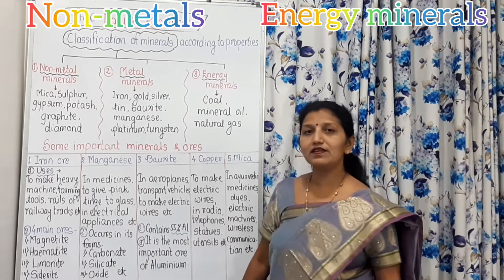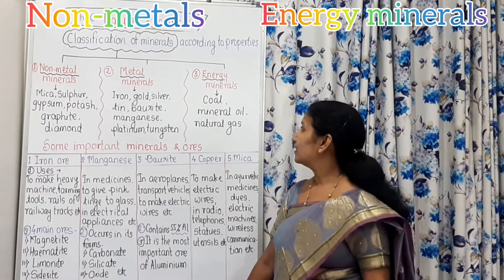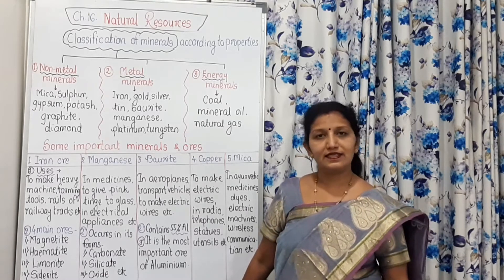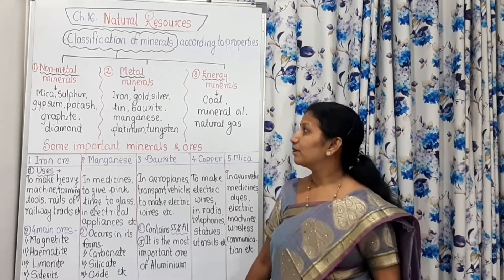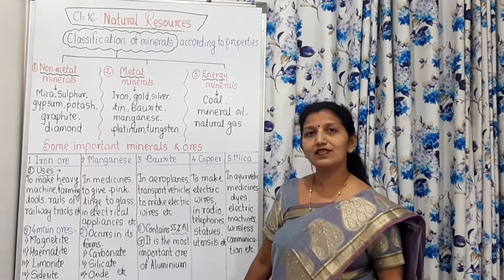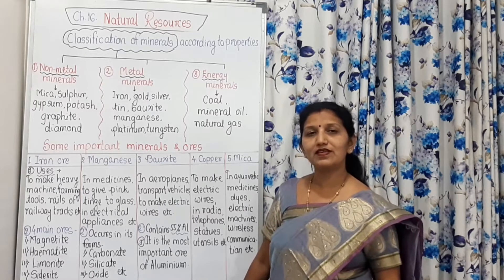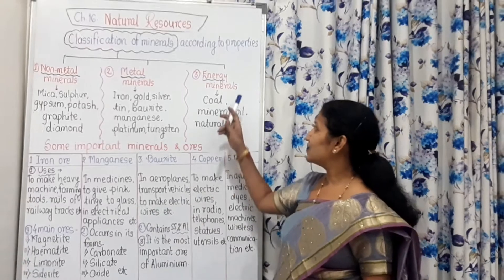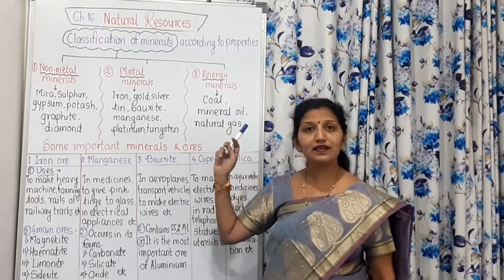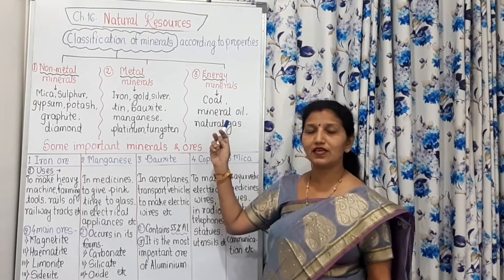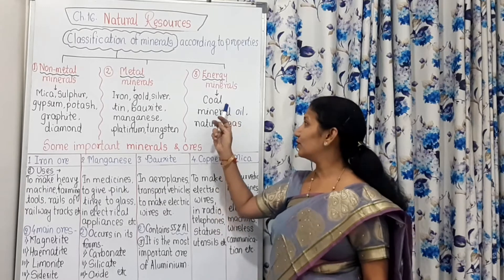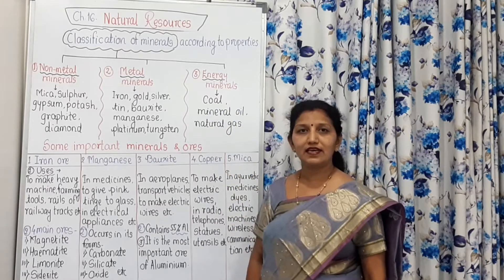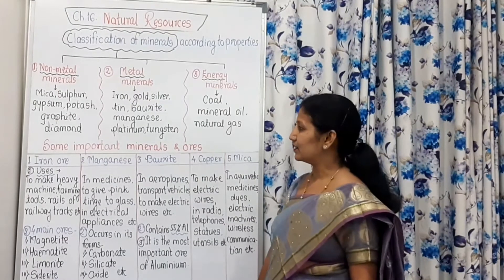Energy minerals include coal, mineral oil, and natural gas. These are three classes of minerals: non-metal minerals, metal minerals, and energy minerals. From energy minerals we get energy — coal, mineral oil, and natural gas are sources of energy, which is why they are called energy minerals.